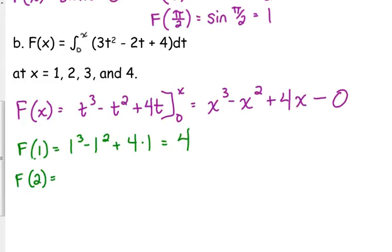F of 2: 2 cubed minus 2 squared plus 4 times 2. That's 8 minus 4 plus 8. 8 minus 4 is 4. 4 plus 8 is 12.